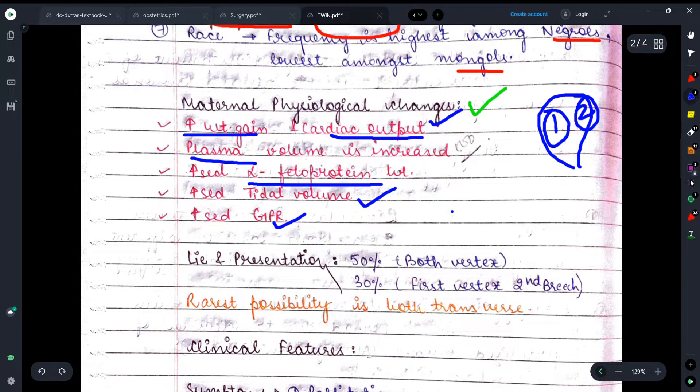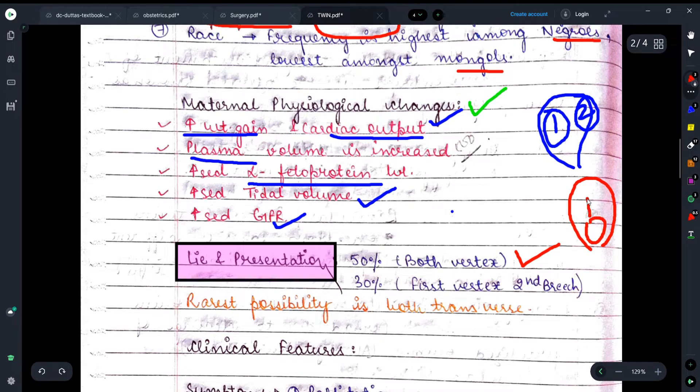Here it has been mentioned about the lie presentation - when two fetuses remain in one uterus, how do they lie? There are 50% chances that both are in vertex position, and 30% chance that the first one is in vertex and the second one is in breech. What is the vertex position? Suppose this is the uterus - if the baby's head is in this direction and the rest of the body is here, this condition is known as vertex position.